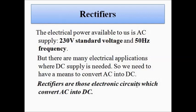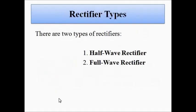Rectifiers are electronic circuits which convert AC into DC. Generally there are two types of rectifiers: half wave rectifier and full wave rectifier. The full wave rectifier is further divided into two sub-categories — the center-tap full wave rectifier and the bridge-type full wave rectifier. We will be discussing them in the full wave rectifier video; for now keep your focus on the half wave rectifier.